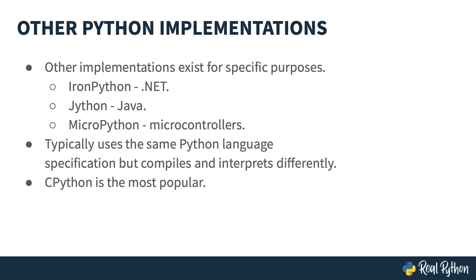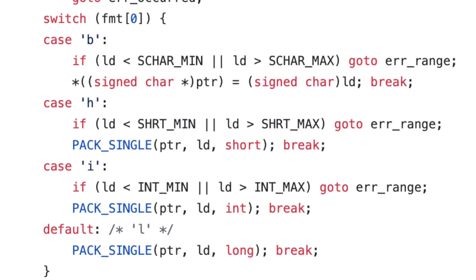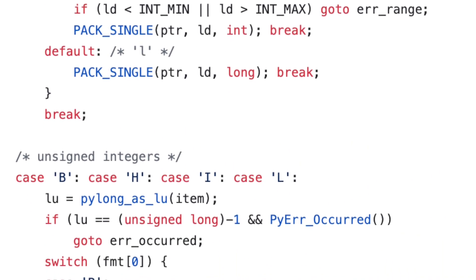It's important to note that there are other implementations of Python too. These use the same Python language specification, but they might compile and run the code a little differently. As a .NET developer, I really like IronPython because it compiles Python code down to Microsoft's Common Language Runtime instead of bytecode for the Python Virtual Machine. This allows me to use Microsoft technologies, like the .NET framework, with Python code. Others exist for other platforms too, but CPython is by far the most popular. CPython gets its name from the fact that it was written using the C programming language, to give CPython the speed it needs to execute quickly and efficiently. All the memory management algorithms and structures exist in the CPython code, all written in C. For this course, we just need to focus on one entity in that C code: the PyObject.